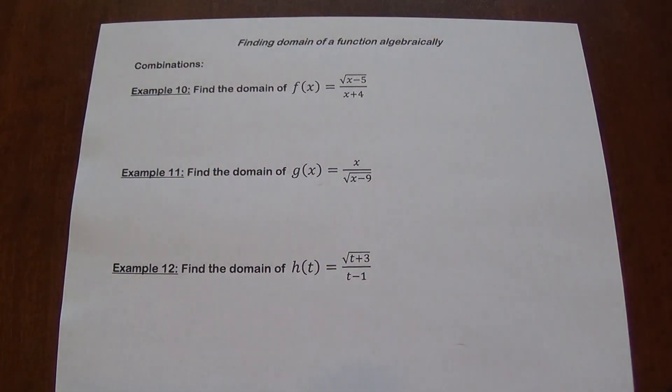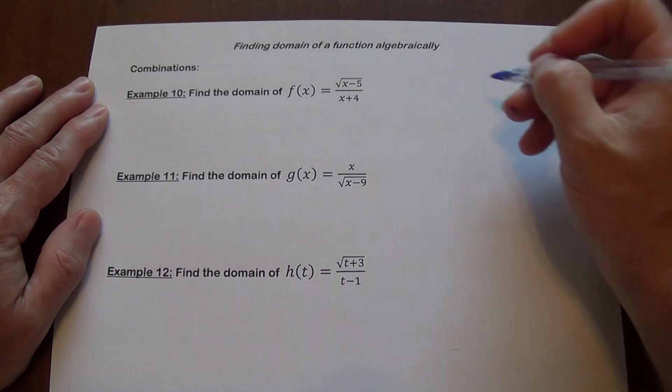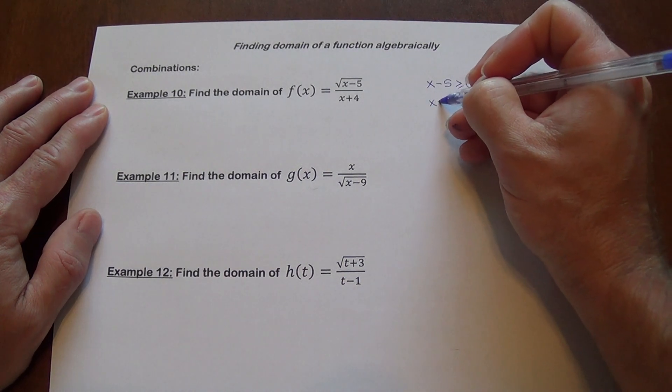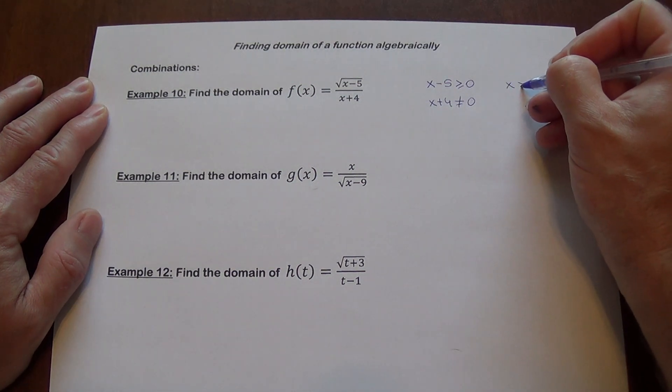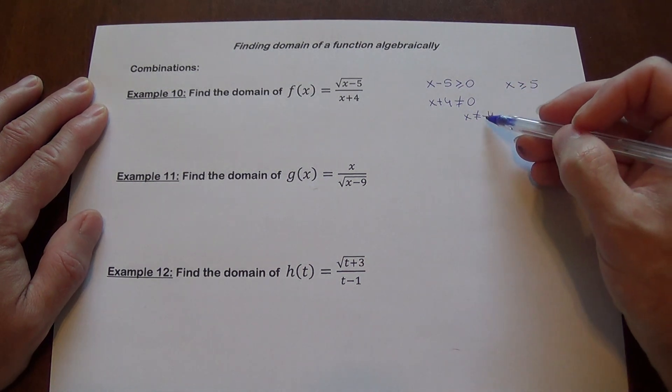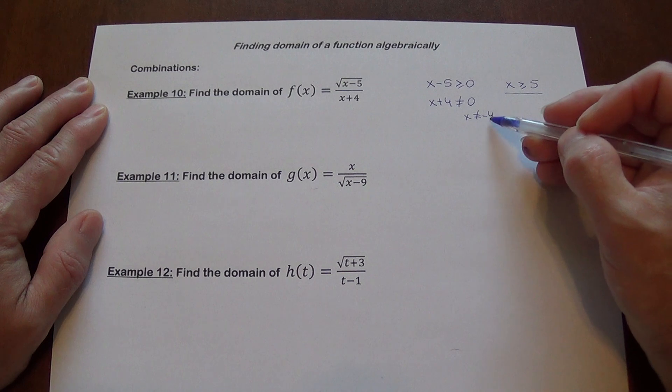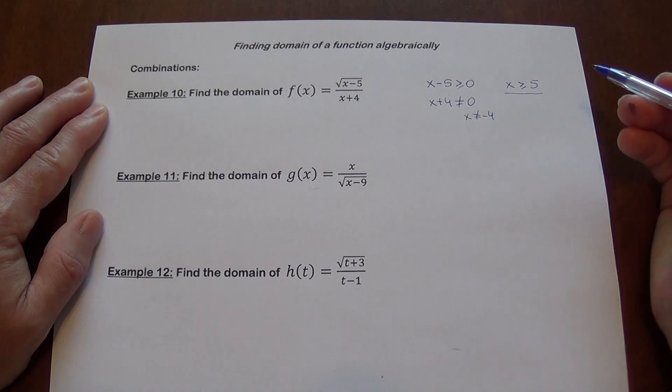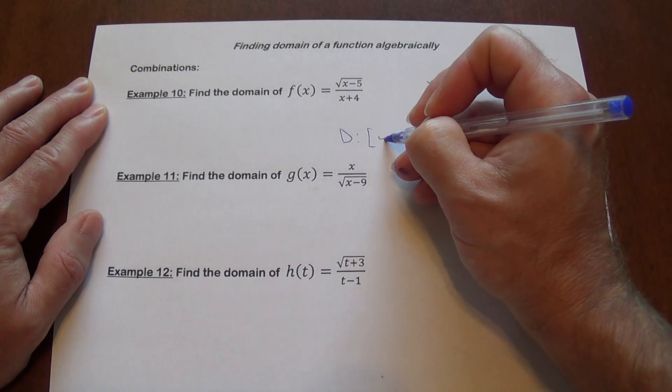Alright, now we're going to make some combinations. So what happens when you have functions like this, like example 10? So we have two things here. On top, we want x minus 5 to be greater than or equal to 0. On the bottom, we want x plus 4 not to equal 0, because we don't want to divide by 0. So the numerator gives us x is greater than or equal to 5, and we want to make sure x is not equal negative 4, but this already takes care of this because if x is greater than 5, this is not going to happen, right? Because if x is greater than or equal to 5, you cannot have 0 at the bottom because that's only going to happen when x is negative 4. So the domain here is going to be 5 to infinity.